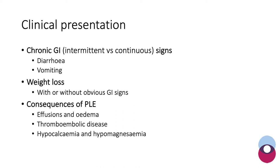Some of these patients can come in with thromboembolic disease, for example difficulty breathing, or with signs of hypocalcaemia or hypomagnesaemia, for example with muscle tremors. Yorkshire Terriers also seem to be predisposed to developing clinically significant hypocalcaemia.